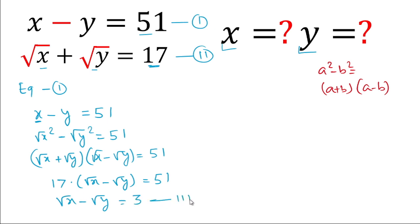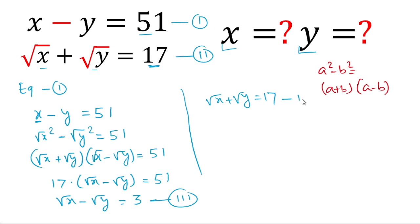We take this as equation 3. Now we write equation 2: under root x plus under root y equals 17, and equation 3: under root x minus under root y equals 3, which we have just calculated.